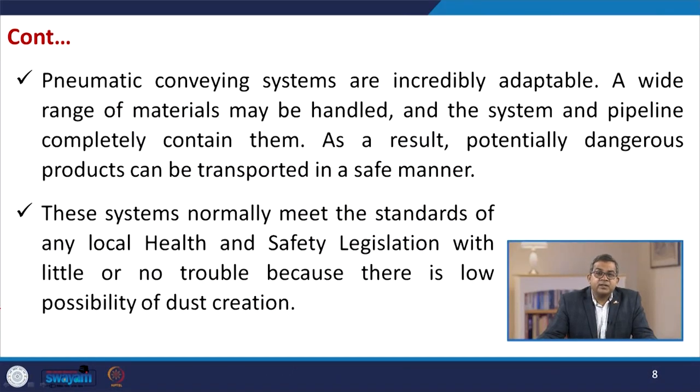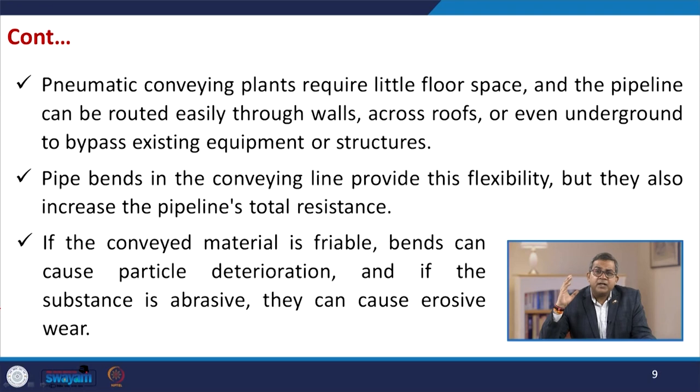The transportation of dangerous material is very important — these systems normally meet the standards of local health and safety legislation, whether at state or federal/central level, with little or no trouble, because there is a low possibility of dust creation. These pneumatic conveying plants require very little floor space, and the pipeline can be routed easily through walls, across roofs, or even underground, bypassing existing equipment or structures, so there is no need to alter the existing layout of the plant.